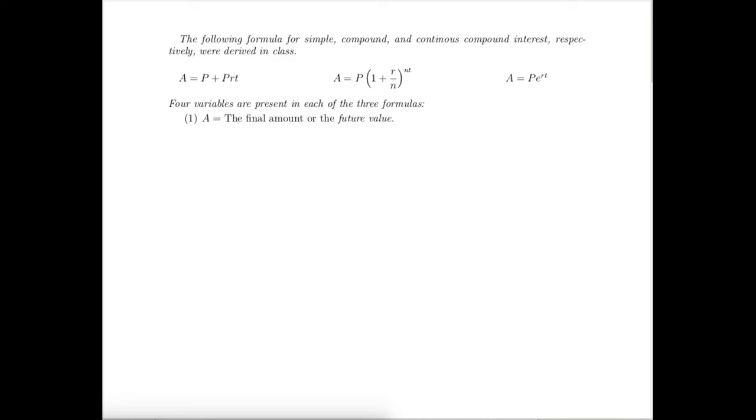Four variables are present in each of these three formulas. A represents the final amount or the future value. P is the principal, sometimes called the present value. It's the amount that's deposited in the bank and then earns interest to become the final amount A. R is the annual interest rate.